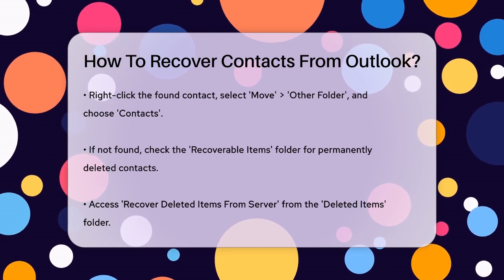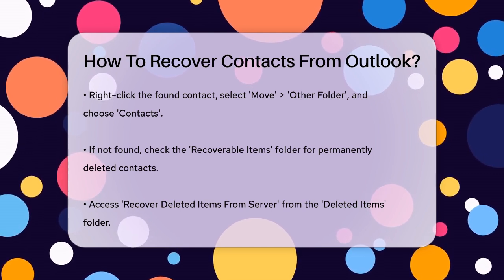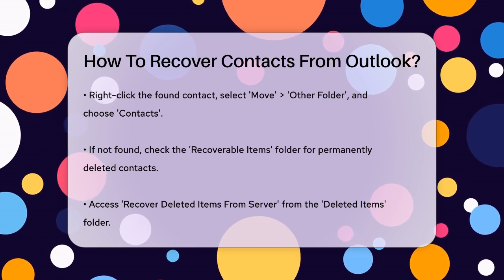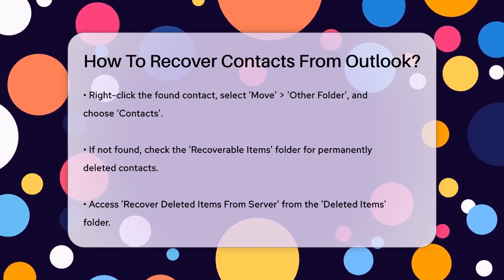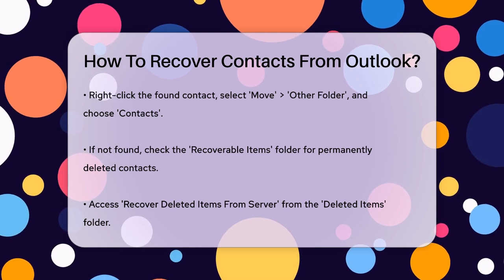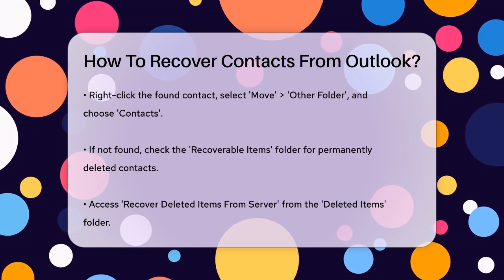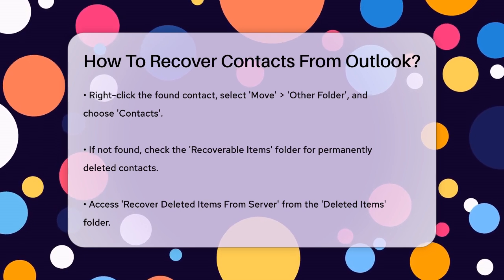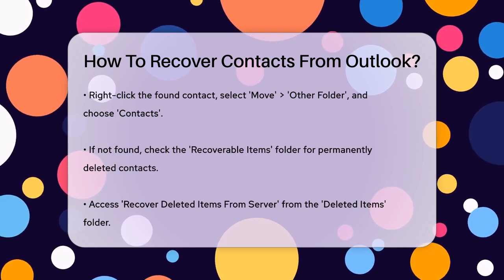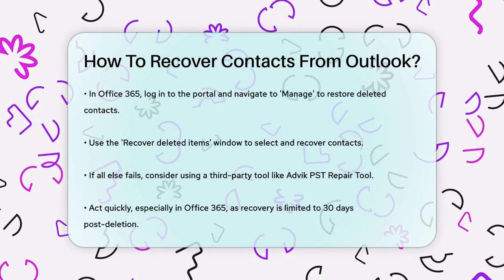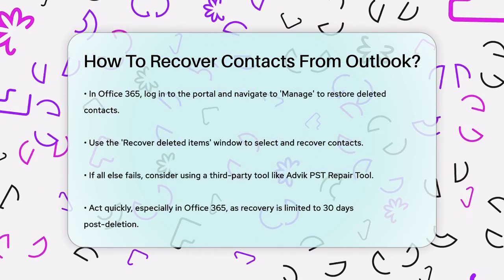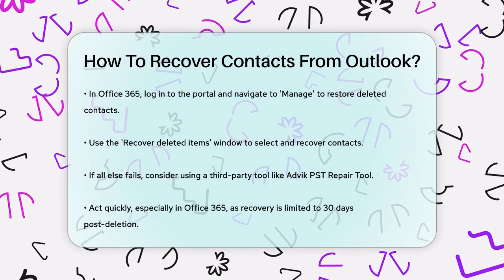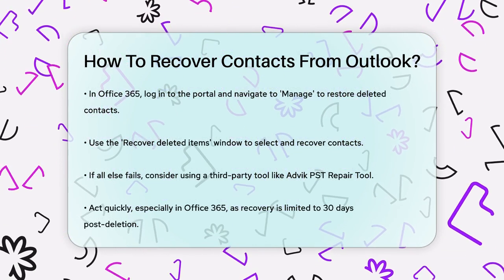In Office 365, the process is similar but involves a few extra steps. Log into your Office 365 portal, navigate to the mail application, select Manage, and then click on Restore Deleted Contacts. In the Recover Deleted Items window, check the box next to the contact you want to restore and select Recover. This will restore the contact to your contact list without affecting any new contacts added since the deletion.